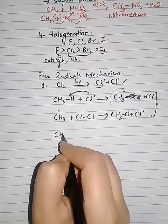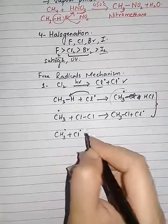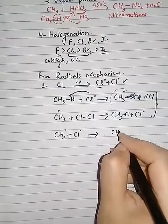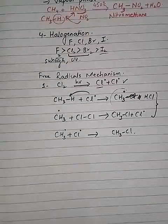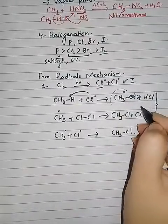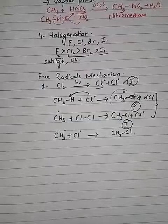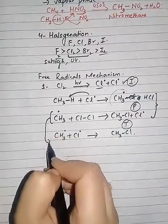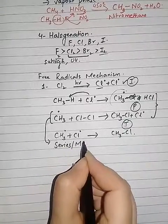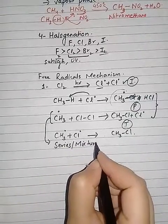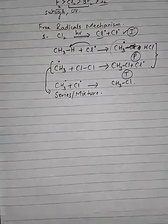This is the initiation, this is propagation, and then at the termination, the methyl radicals that are left in the reaction area will combine with the leftover chloride radical and will form methyl chloride and the reaction will stop here. When this second step is repeated again and again, it will form a series or mixture of different substituted compounds.